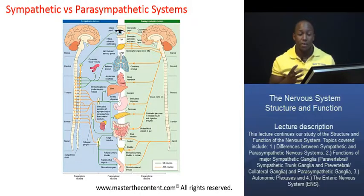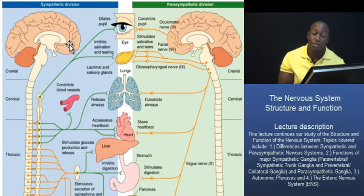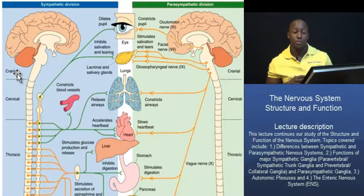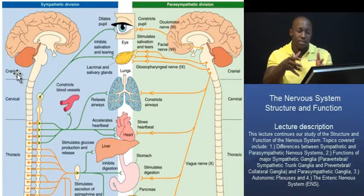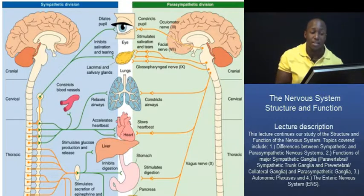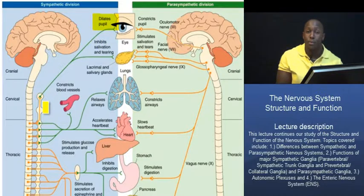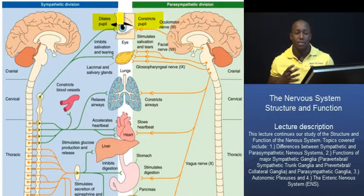What I want to do next is use a diagram to highlight some of the key differences in the responses mediated by these two divisions. On the left of the screen is the sympathetic division, and on the right in green are the responses mediated by the parasympathetic division. For instance, the sympathetic system will function to dilate your pupils to help you see better — that's a fight or flight response. On the flip side, the parasympathetic system will function to constrict your pupils, reducing the amount of light entering the eye.